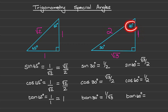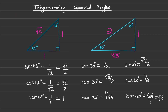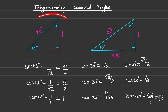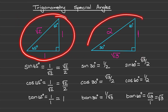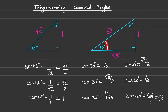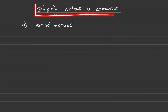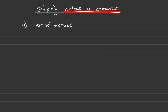The tan of 60 degrees is the opposite over the adjacent side, so that is square root of three over one, or simply the square root of three. For both of these triangles you simply need to memorize the angle sizes and lengths in order to answer questions. Let us do a few examples where we will simplify expressions without the use of a calculator.